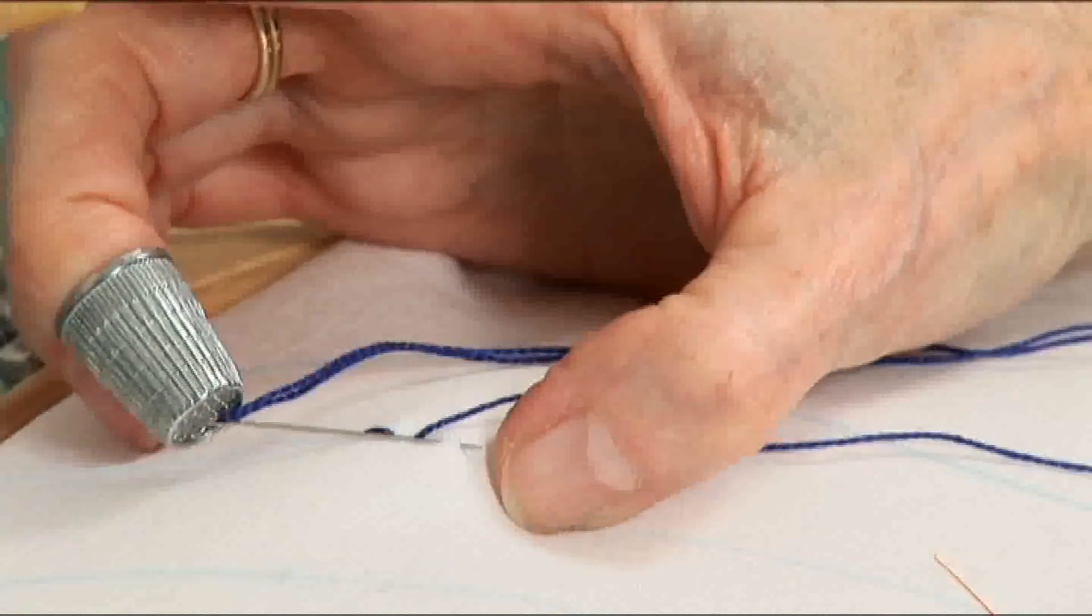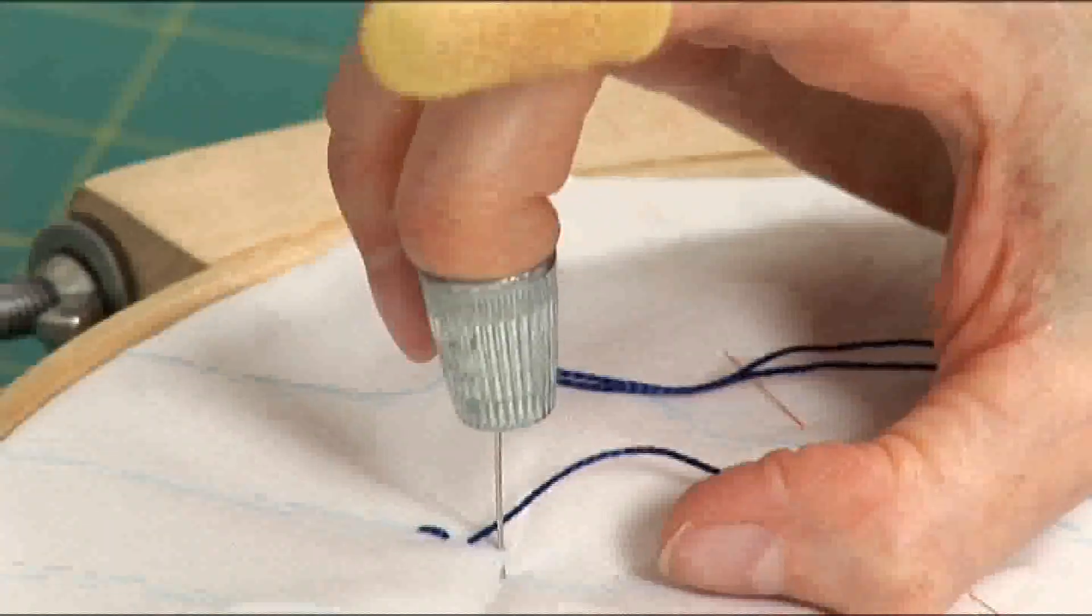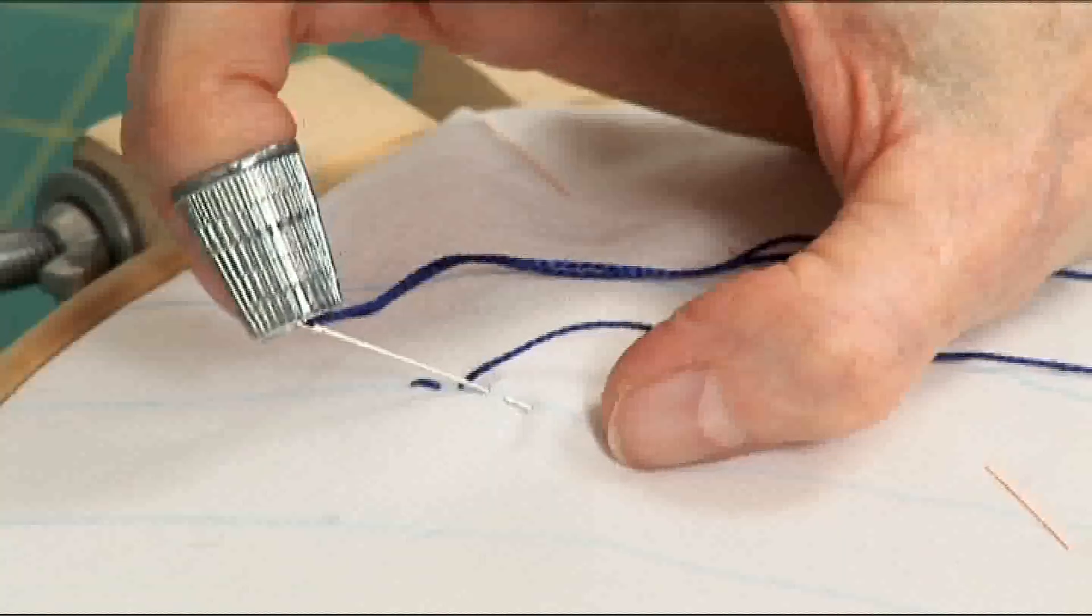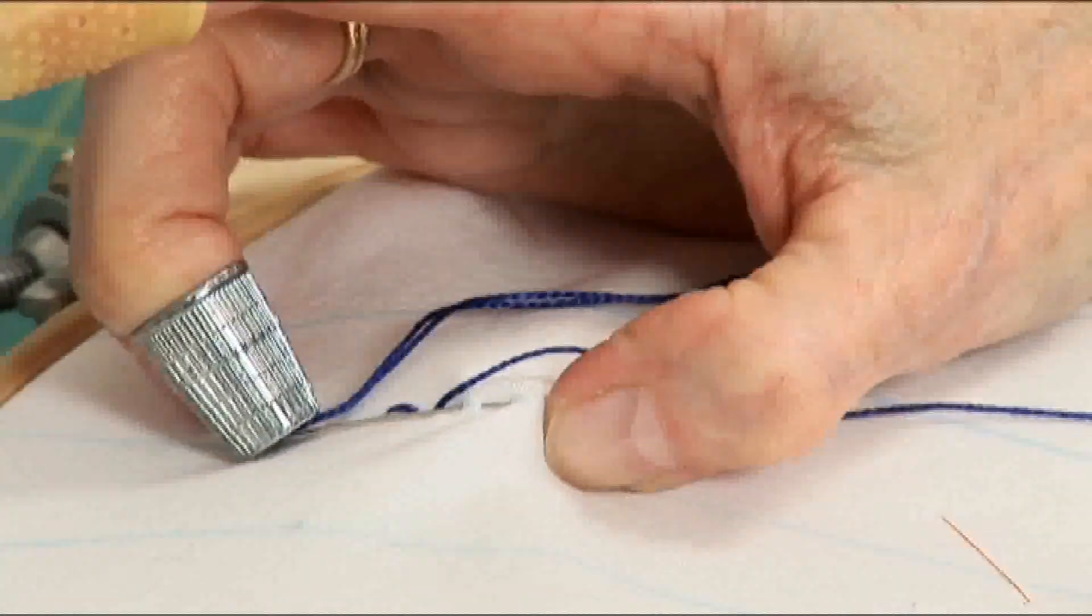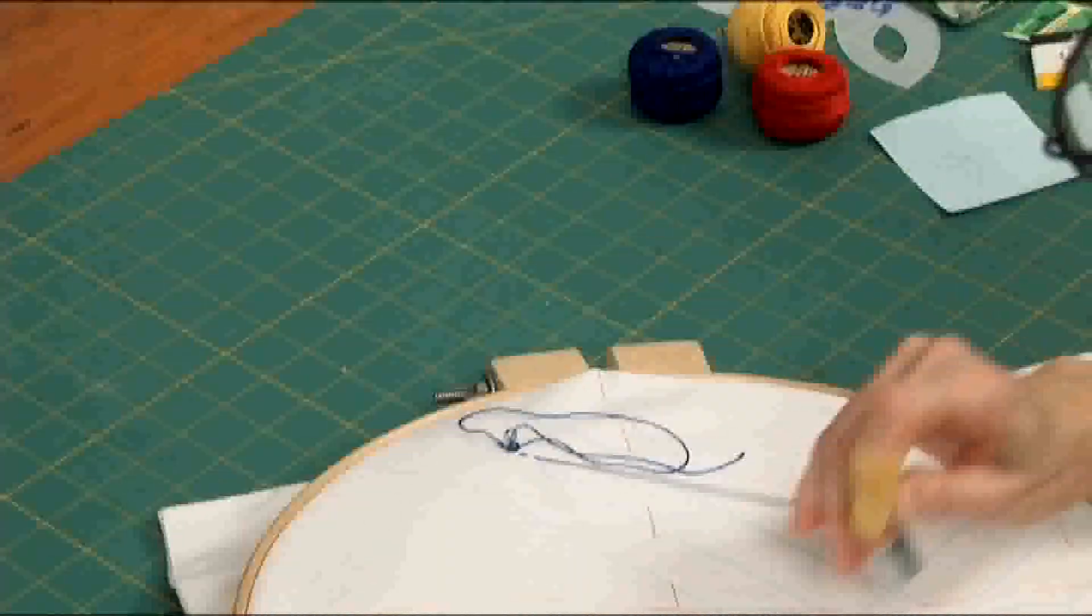Push the needle through about a quarter of an inch. Now we'll take a second stitch. Touch the underneath fingers. Push up with the underneath fingers and down with the thumb. And there's a second stitch.